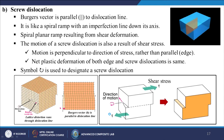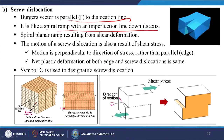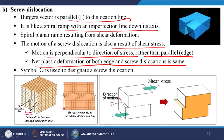For screw dislocation, the Burgers vector is parallel to the dislocation line. It is like a spiral ramp with an imperfection line down its axis — a screwing type arrangement takes place. The motion of a screw dislocation results from shear stress; the motion is perpendicular to the direction of stress rather than parallel. The net plastic deformation of both edge and screw dislocations is the same.